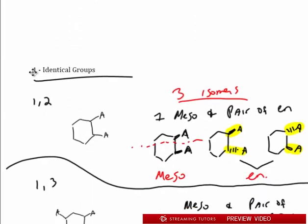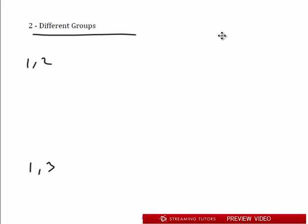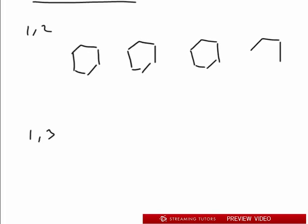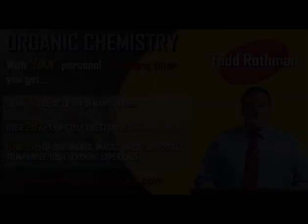Now when the groups are not identical — when you have different groups — and we do this analysis again for 1,2, 1,3, and 1,4, we find that for 1,2 you're going to have four isomers, because there is never going to be a meso potential when the two groups are different.